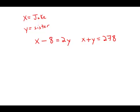So I think the easiest way to solve this, I'm going to solve this first equation for x. Just add 8 to both sides. We get x equals 2y plus 8.